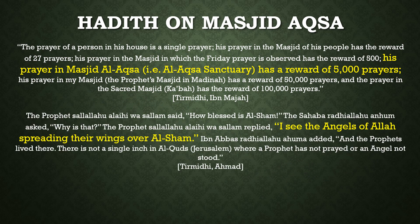Nabi Sallallahu Alaihi Wasallam speaks about the significance of Al-Sham — that area which comprises and covers Palestine, Syria, and Jordan — saying that the angels of Allah have spread their wings over Al-Sham. Ibn Abbas says that the city of Jerusalem, Al-Quds, is a place where the Prophets had lived, and there is not a space in that city where a prophet has not prayed or an angel has not stood.